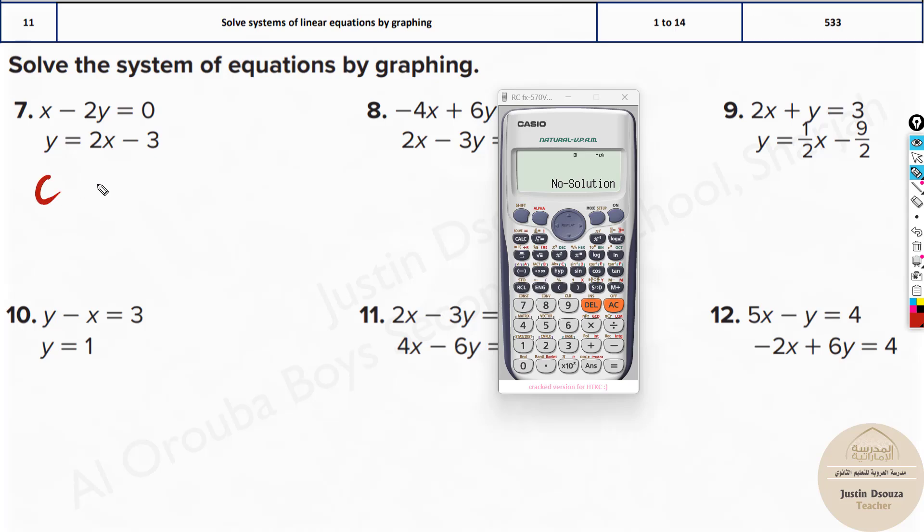That is how we solve these problems. I'll just write out the types of graphs. So if it is consistent, then it can be two things. And one more is inconsistent. What about consistent? It can be dependent and independent. One, two. So first, dependent would be same lines. That is the thing.